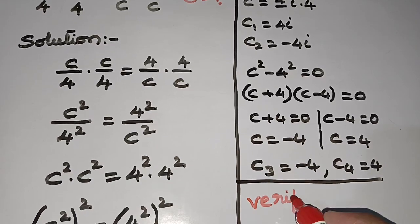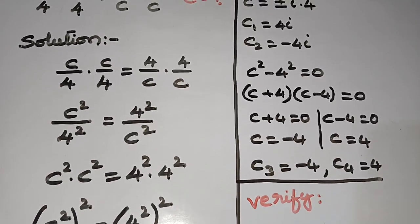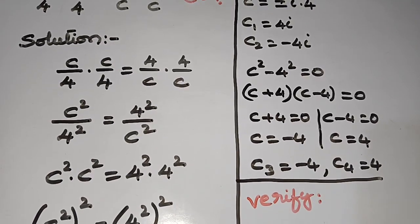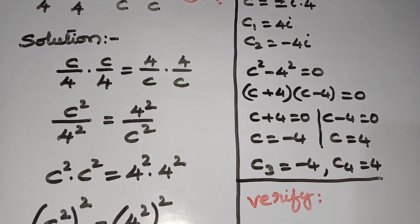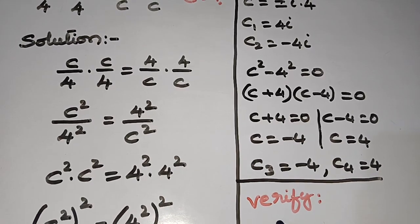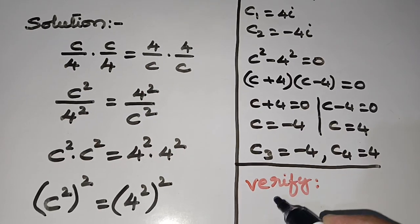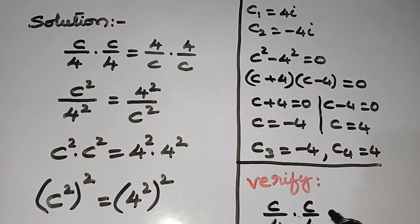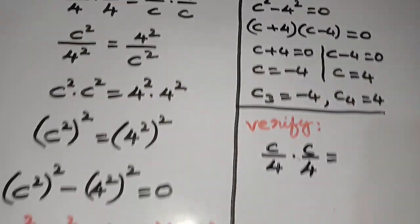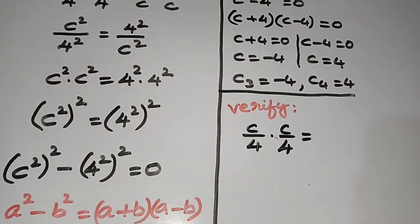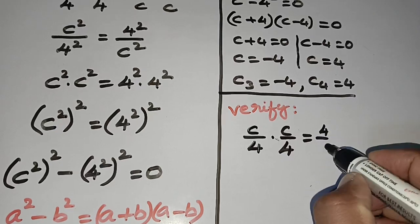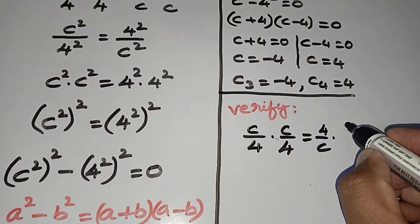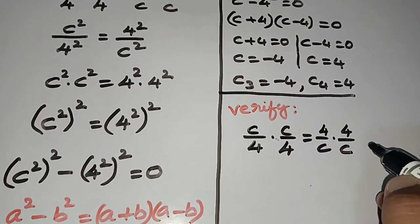We verify by substituting all four values. If all four values satisfy, then each value is a solution. The given equation is c/4 times c/4 equals 4/c times 4/c.